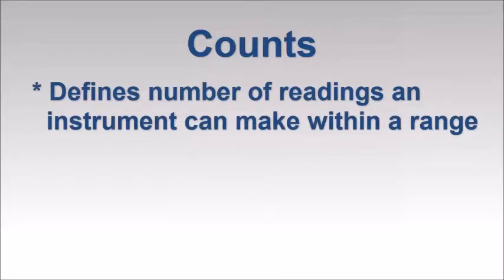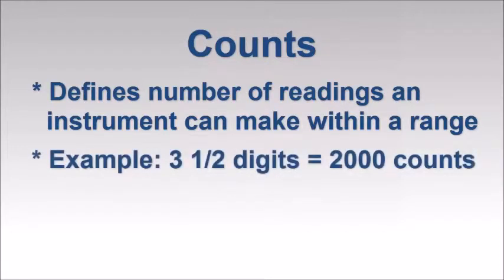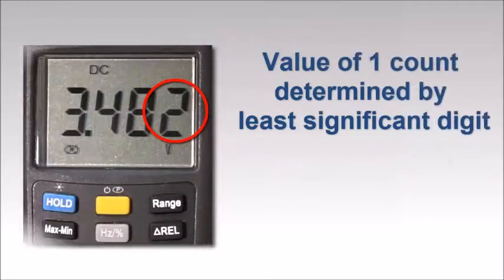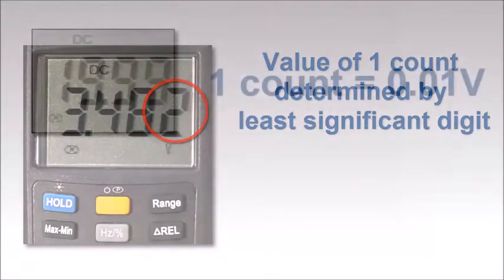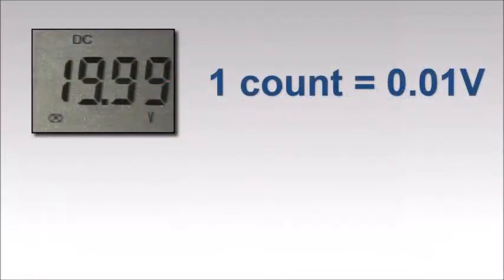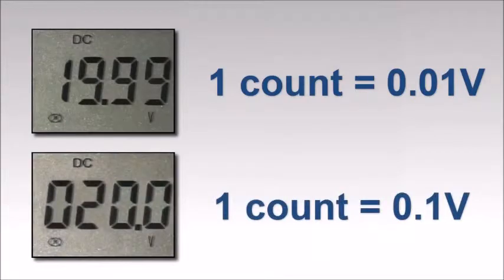For example, the three-and-a-half-digit multimeter described earlier is a two-thousand-count instrument, since it is capable of displaying readings to plus or minus 1999. The value of each count is determined by the reading's rightmost number, called the least significant digit. In the preceding example, for a reading of 19.99 volts, each count equals one-hundredth of a volt. For a reading of 20 volts, each count equals one-tenth of a volt.